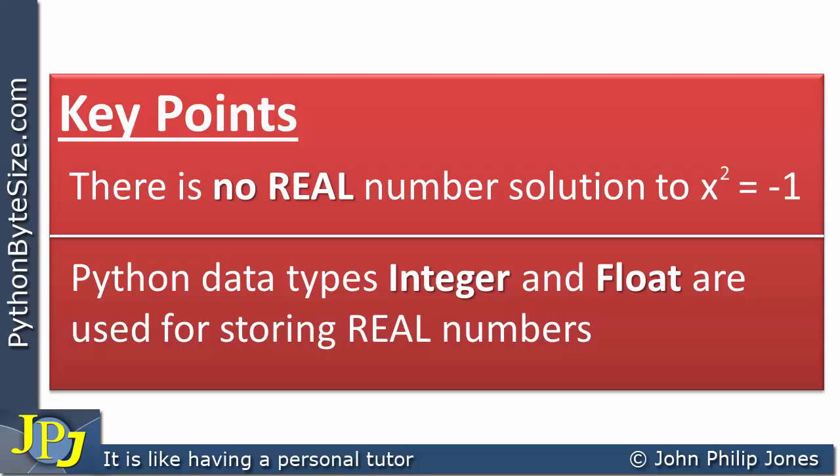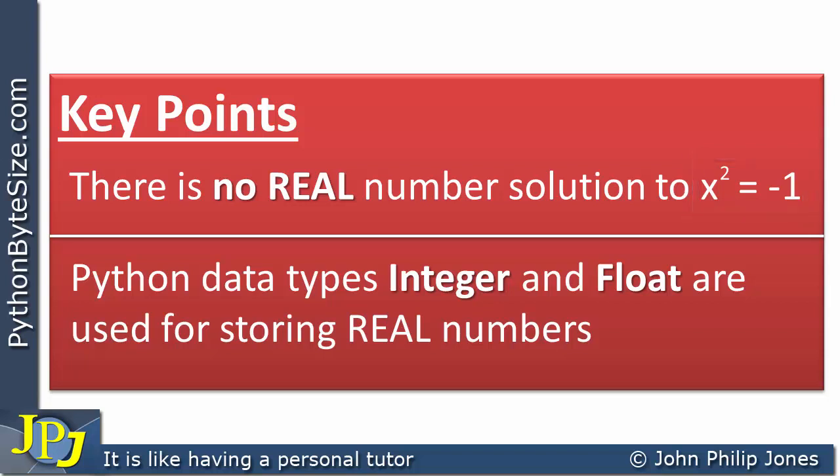The key here is what I want you to take away: there is no real number solution to x squared equals minus 1, and real numbers are stored using the integer class and the float class in Python.